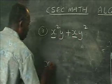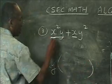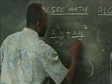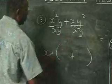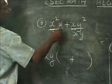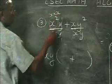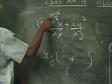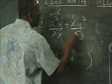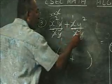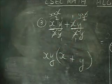What's left inside? I divide each term by xy. For the first term: the y's cancel, and x squared divided by x leaves just x. For the second term: the x's cancel, and y squared divided by y leaves just y. So the answer is xy(x + y).